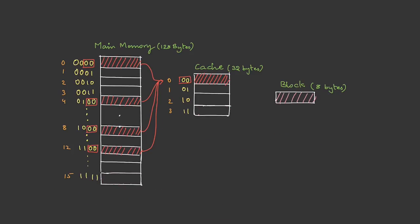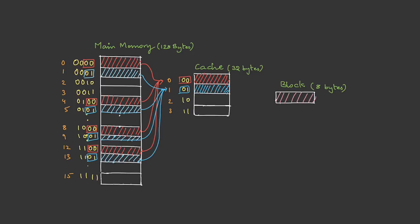So line 0 can hold blocks 0, 4, 8, and 12. Now, line 1 can hold blocks 1, 5, 9, and 13, because the least significant bits of those blocks match the cache index 01. But this does not mean all 4 blocks are placed into line 1 simultaneously — the line can hold any one of them at a time. Which one it holds really depends on the current state, and the CPU must have a mechanism to understand which of these 4 blocks is residing in line 1.